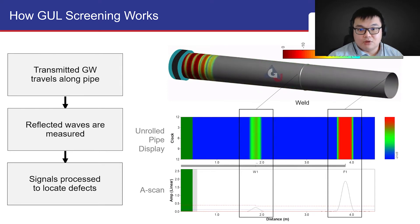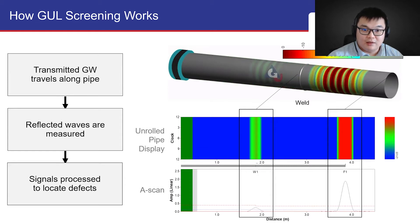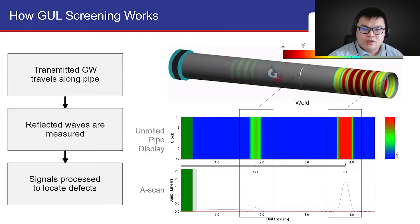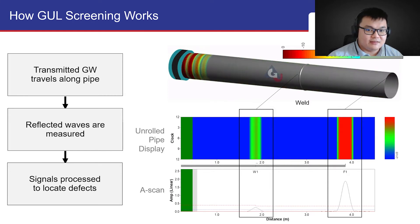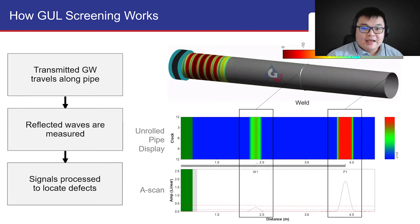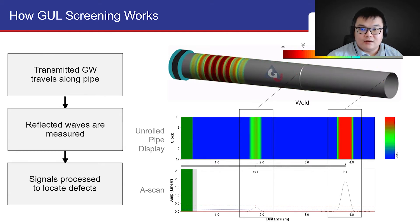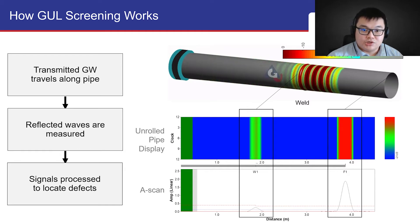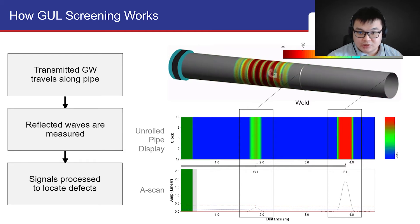Firstly, the A-scan can be obtained, which is a plot of signal amplitude against distance. This gives us information about the axial position of the defect, as well as an estimate of the defect's severity. Secondly, the unrolled pipe display, or C-scan, which leverages on full matrix capture technology to give information on the defect's circumferential position.